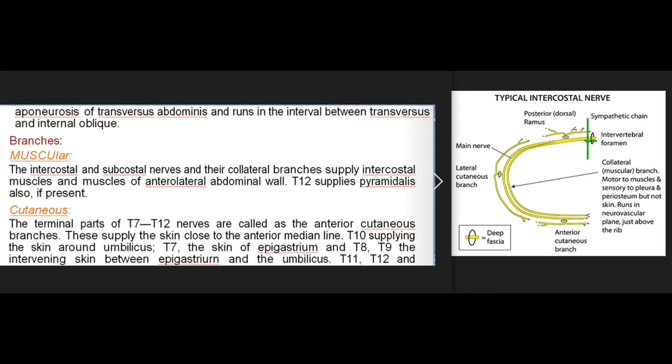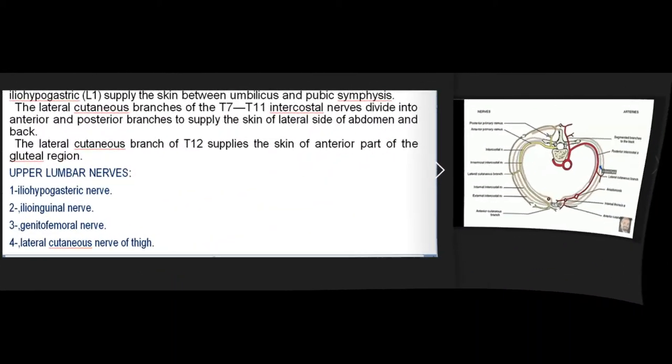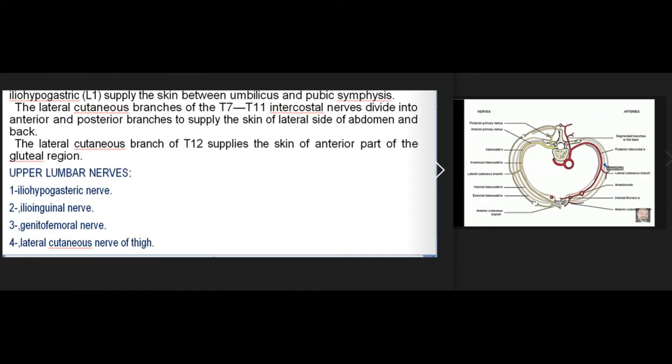Branches — Muscular: the intercostal and subcostal nerves and their collateral branches supply the intercostal muscles and muscles of the anterolateral abdominal wall. T12 also supplies pyramidalis, if present. Cutaneous: the terminal parts of T7-T12 nerves are called the anterior cutaneous branches. These supply the skin close to the anterior median line: T10 supplies the skin around the umbilicus, T7 the skin of the epigastrium, T8 and T9 the intervening skin between the epigastrium and the umbilicus, and T11, T12 and iliohypogastric supply the skin between the umbilicus and the pubic symphysis. The lateral cutaneous branches of T7-T11 intercostal nerves divide into anterior and posterior branches to supply the skin of the lateral side of abdomen and back.